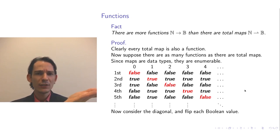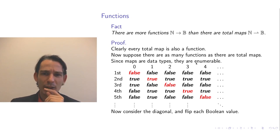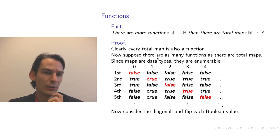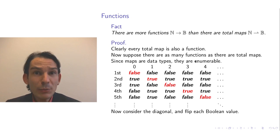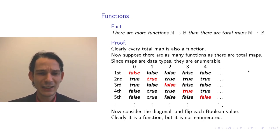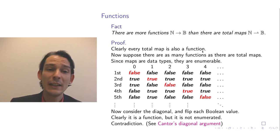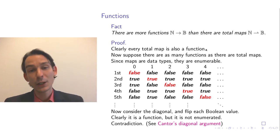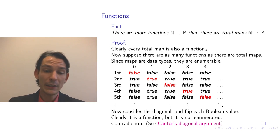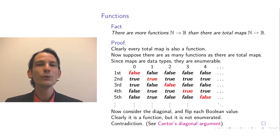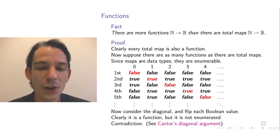We now have a function that is not part of the enumeration, but we assumed there are as many functions as total maps, so all functions should be enumerable. That's a contradiction. Therefore it is not the case that there are as many functions as total maps. Since every total map can be considered a function, there must be more functions than total maps. This argument is a well-known proof called Cantor's diagonalization argument.